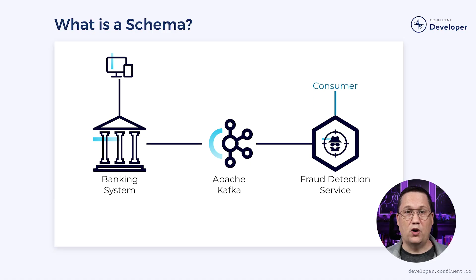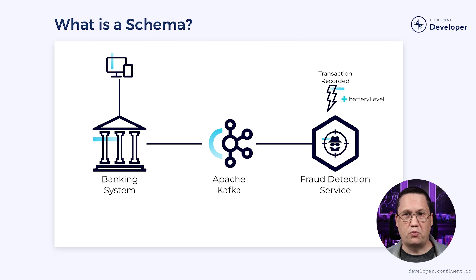They will need to update both the producer and consumer of the messages, but the order they do it can impact the solution. Let's suppose they start by updating the consumer. They will add the appropriate battery-level field into the message. The field must be optional because the producer hasn't been updated — otherwise, when the consumer tries to read the data, it won't be there, which could cause a failure. If an optional field is acceptable, they could continue with this solution.